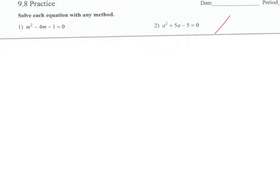Let's start on number two. We're going to solve this with any method. I would always try factoring first, so we're going to do A times C up top and B on bottom. B is five, so I'm going to think of two numbers that multiply to the top and add to the bottom.